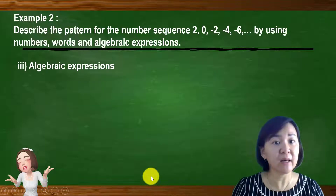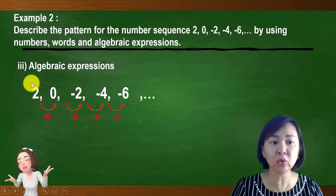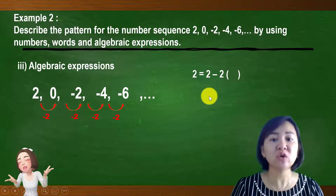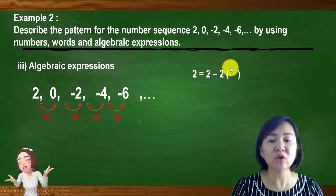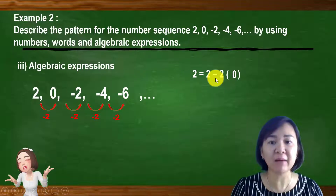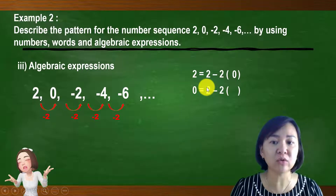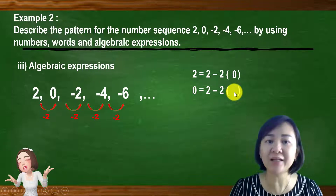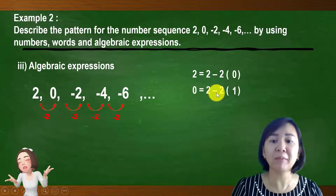When writing in algebraic expressions, we start with the first number 2 and the pattern is minus 2. For the first term: 2 minus 2 times 0 — since 2 times 0 is 0, then 2 minus 0 equals 2, which is correct. For the second term: 2 minus 2 times 1 — since 2 minus 2 equals 0, which is correct.